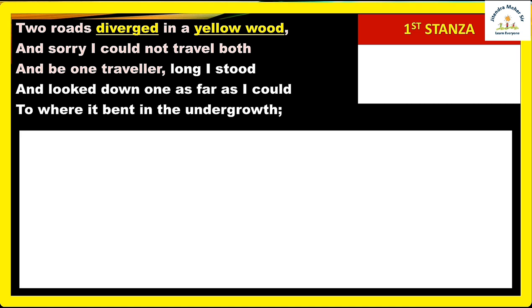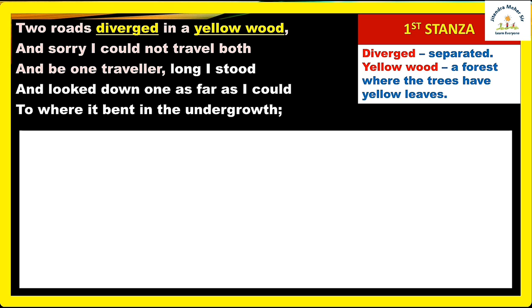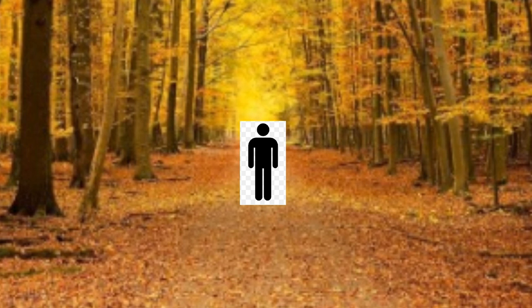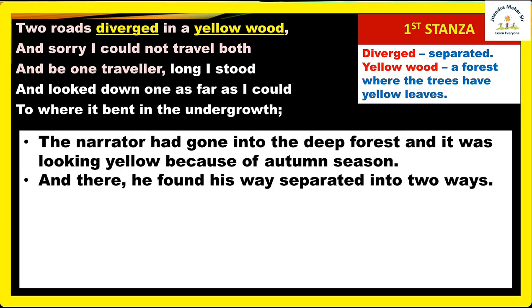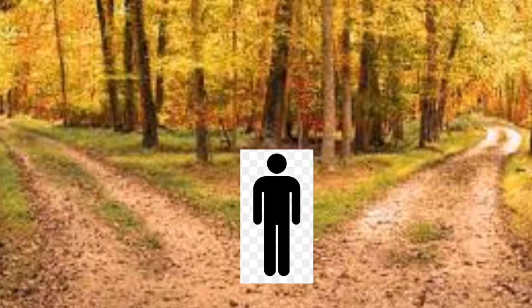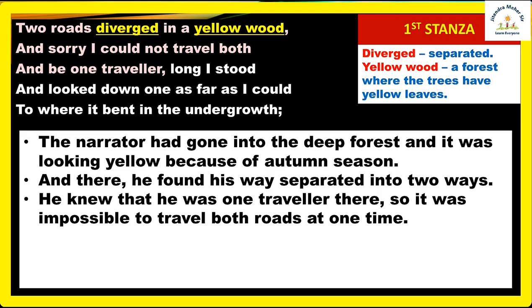Now let's see the analysis of the four stanzas one by one. In the first stanza, 'two roads diverged in a yellow wood' — 'diverge' means become separated, and 'yellow wood' means a forest where the trees have yellow leaves because of autumn season. The narrator had gone into a deep forest and found his way separated into two paths. He says 'sorry I could not travel both and be one traveler,' meaning it was impossible to travel both roads at the same time.